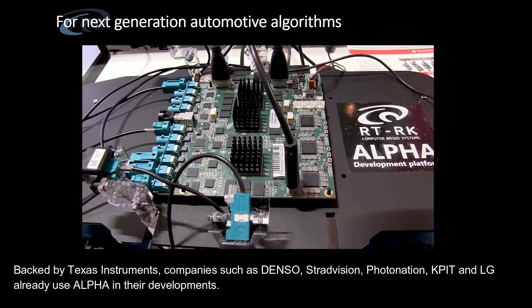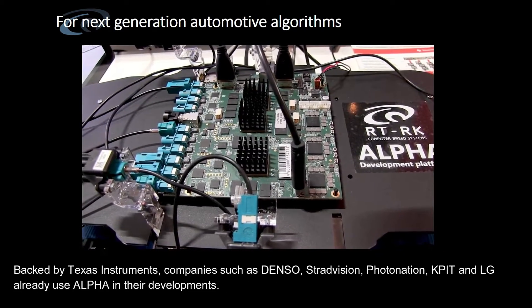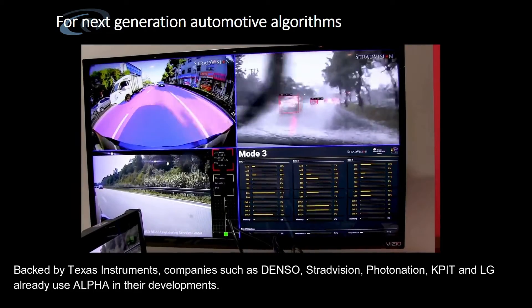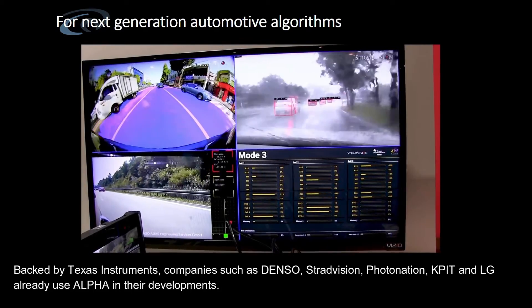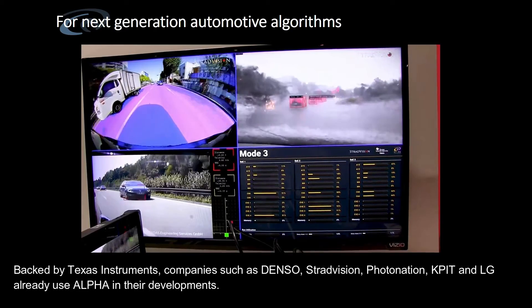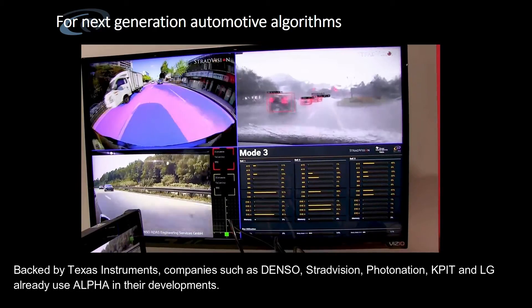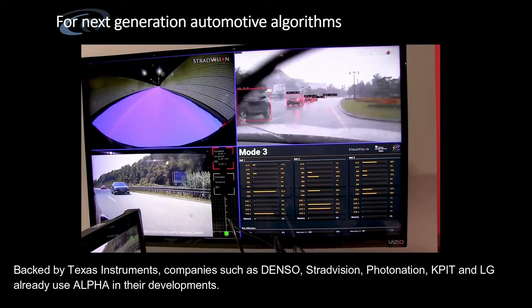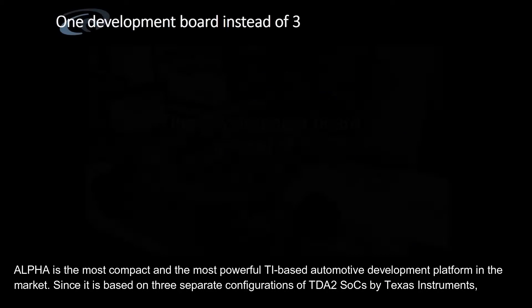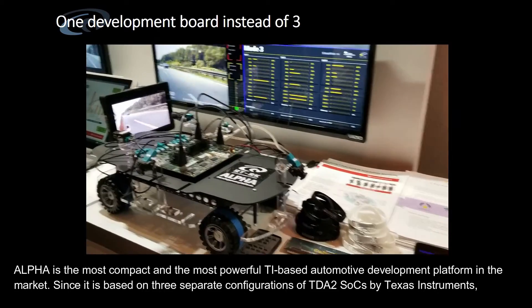Backed by Texas Instruments, companies such as Denso, Stradvision, Photonation, Capit and LG already use Alpha in their developments. Alpha is the most compact and the most powerful TI-based automotive development platform in the market.